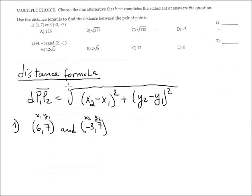Question 1 is about using the distance formula to find the distance between a pair of points. In this case we have 2 points: (6, 7) and (-3, -7).